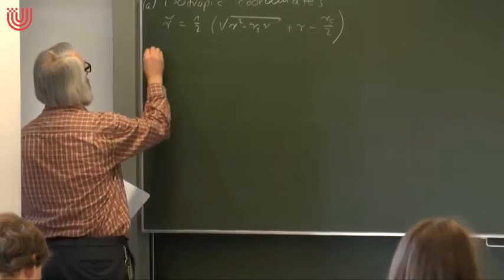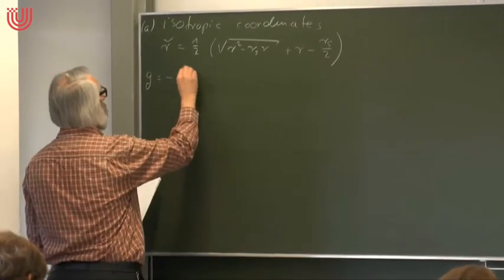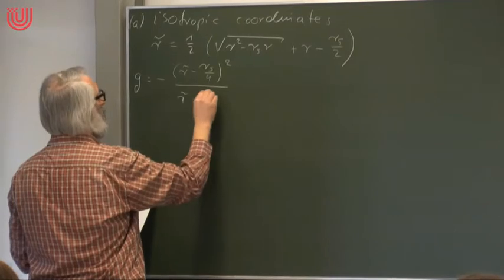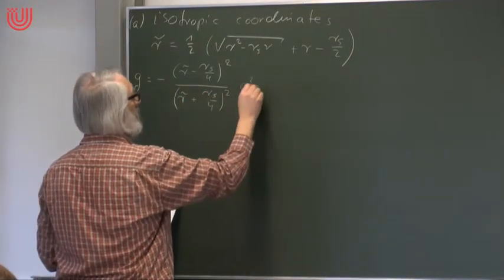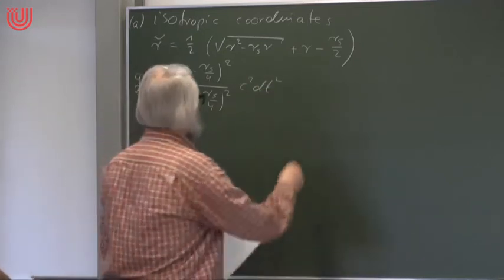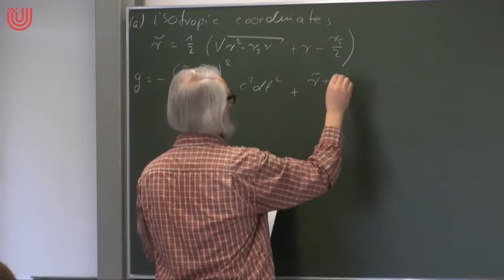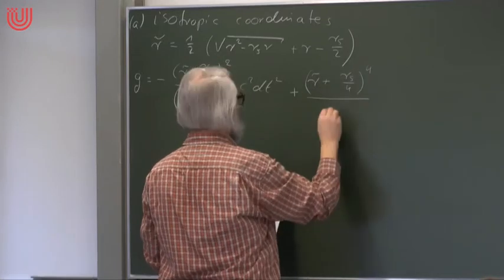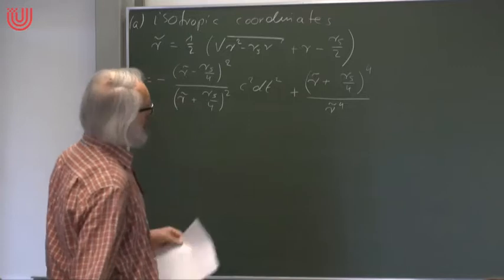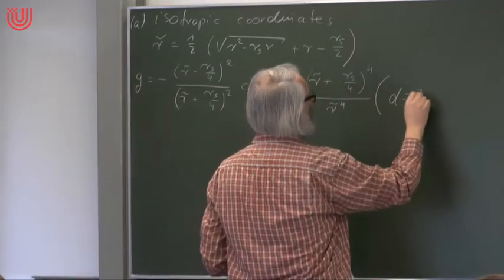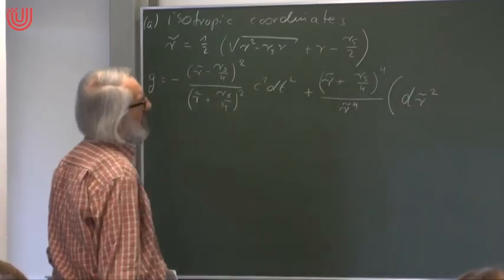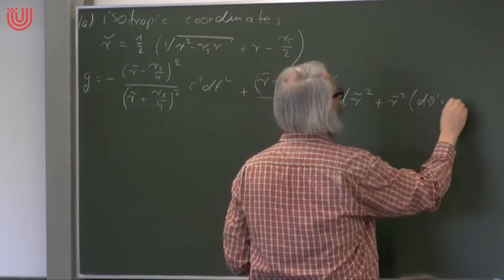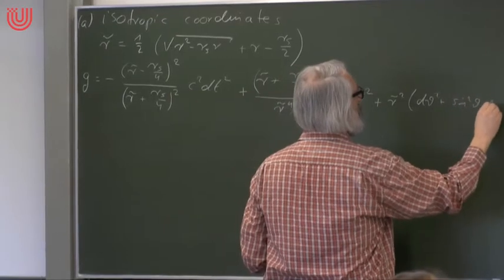The metric had the following form: a factor of (r-tilde minus rs/4) squared over (r-tilde plus rs/4) squared times c squared dt squared, and then a conformal factor (r-tilde plus rs/4) to the fourth divided by r-tilde to the fourth, multiplied by the standard Euclidean metric in spherical polar coordinates.